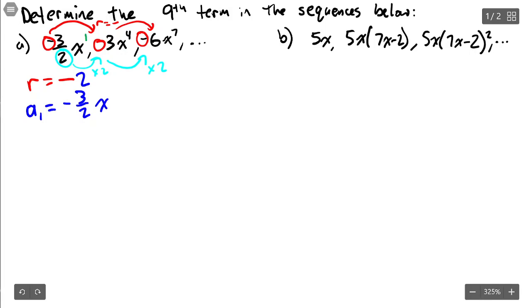Now we need to look at the variable part. This is x to the one, then it goes up to x cubed, then to x to the seventh. So each time we've added three powers of x, which is x cubed. So it's negative two x cubed is our ratio. There's our initial term, there's our ratio, and we want to find the ninth term.